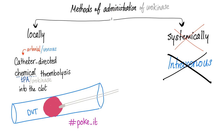When we talked about TPA, it was administered through two routes: locally through a catheter, or systemically through intravenous injection. Not with urokinase. We have tried many times to administer it systemically, but we've failed. The only method of administering urokinase is through catheter-directed chemical thrombolysis of the clot. So if this is your vein and this is a DVT, introduce a catheter into the clot and deliver urokinase. It will convert plasminogen into active plasmin, and plasmin will destroy the clot.